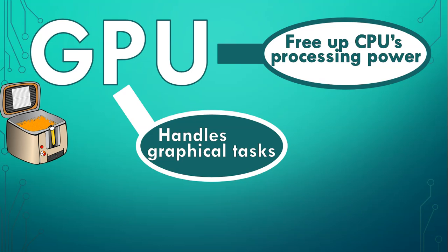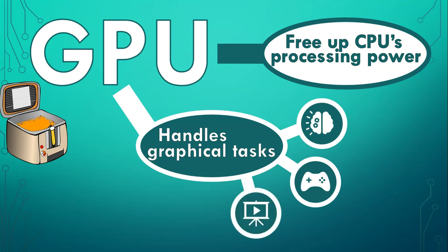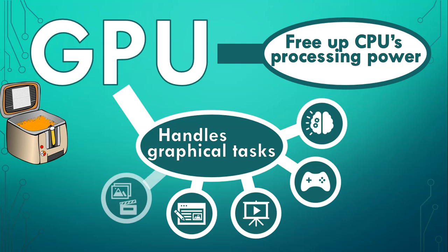The CPU is considered like the brain of the computer, handling general tasks like calculations, running programs, and managing the computer's overall performance. On the other hand, the GPU is specialized in handling complex graphics calculations, especially in games, handling tasks like rendering 2D and 3D graphics, processing video playback, running graphical user interfaces, and accelerating image and video editing processes.